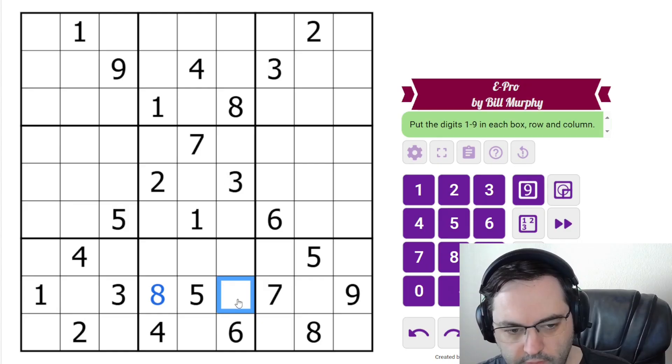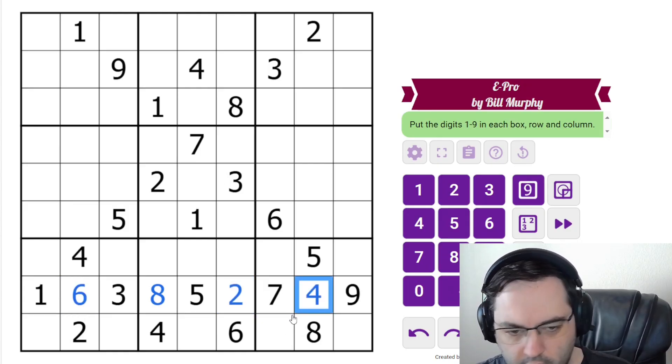And we have a 2 here, so this is 8, this is 2, this can't be 4, and that completes that row.